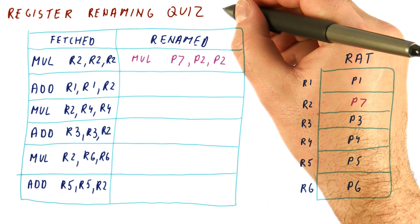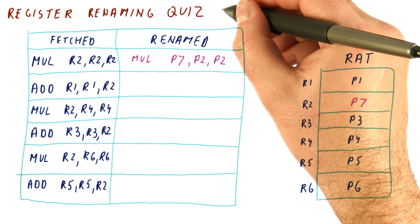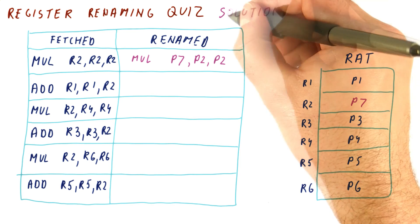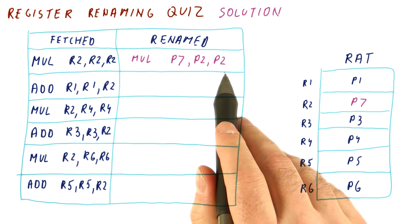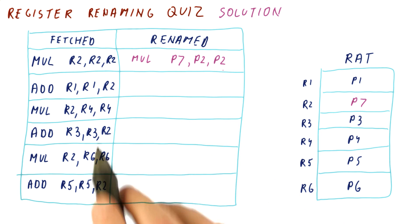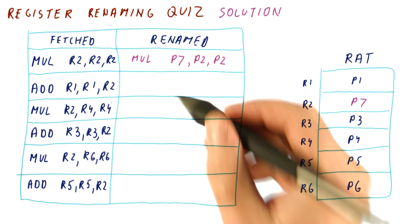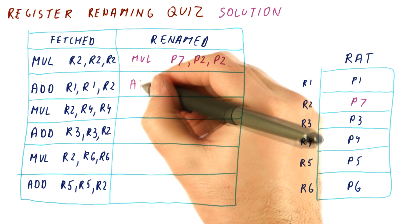Let's look at a register renaming quiz solution. We have seen the first instruction renamed. Let's now rename the second one.